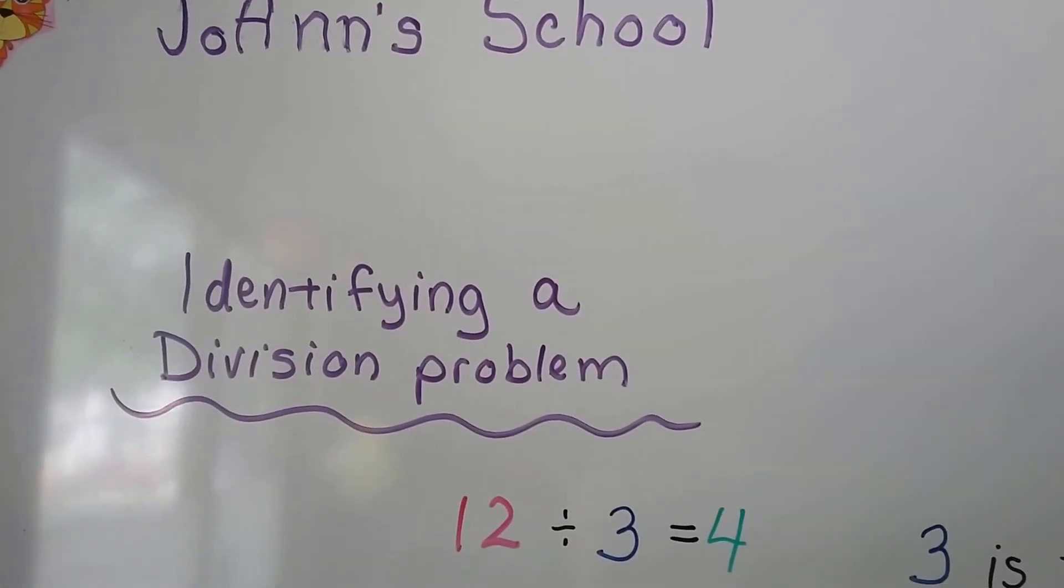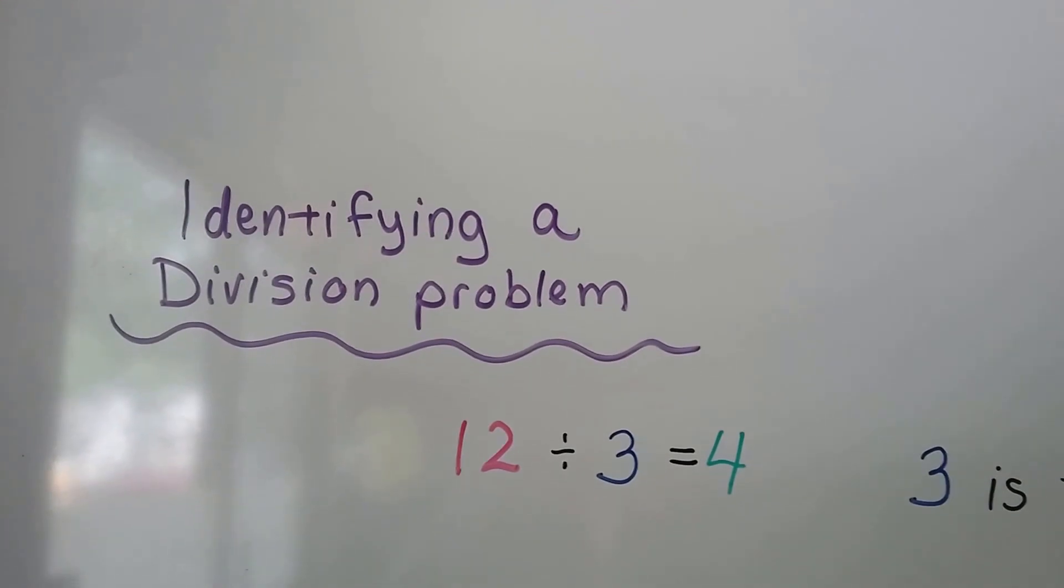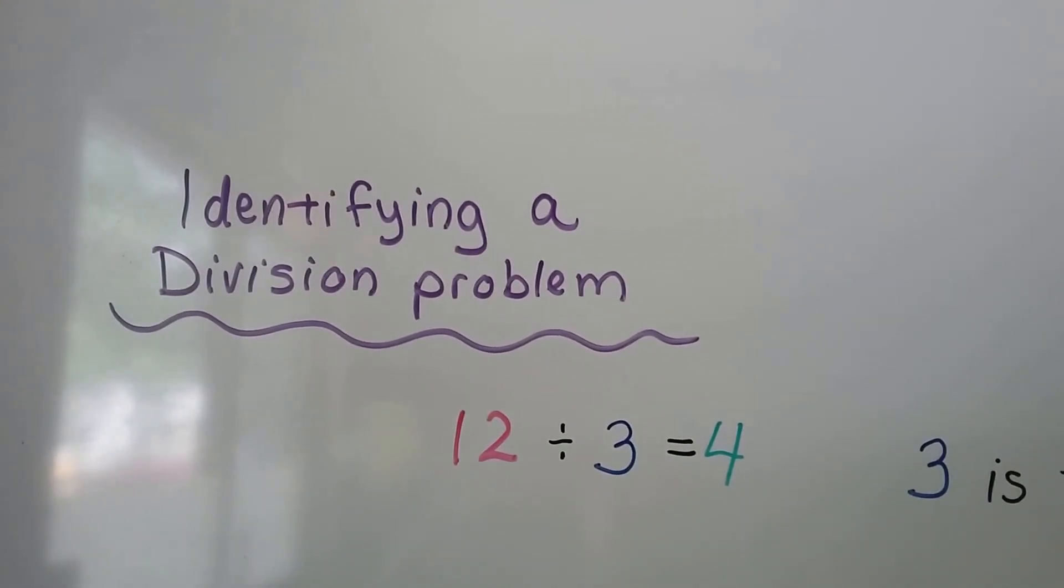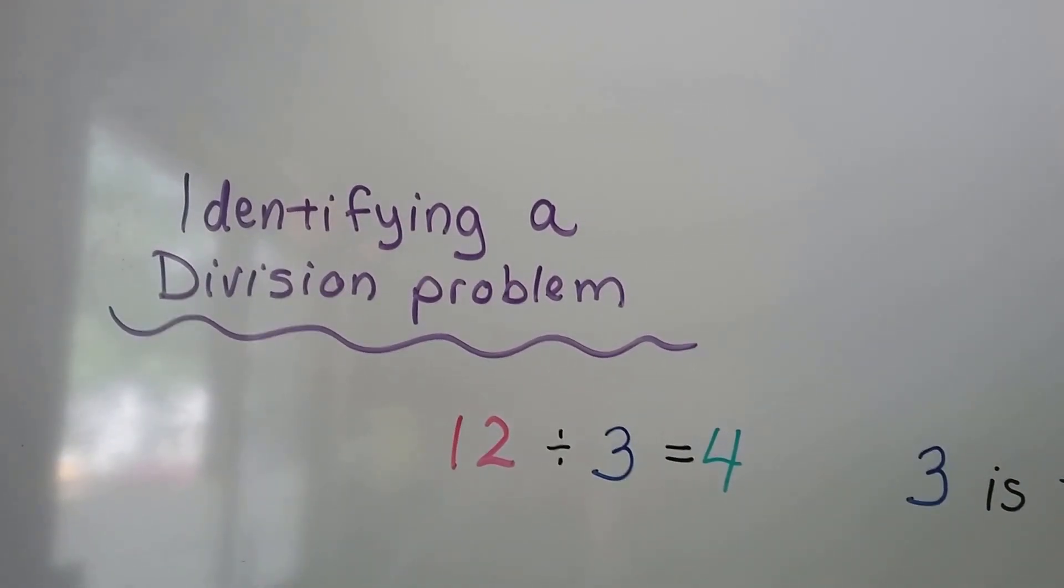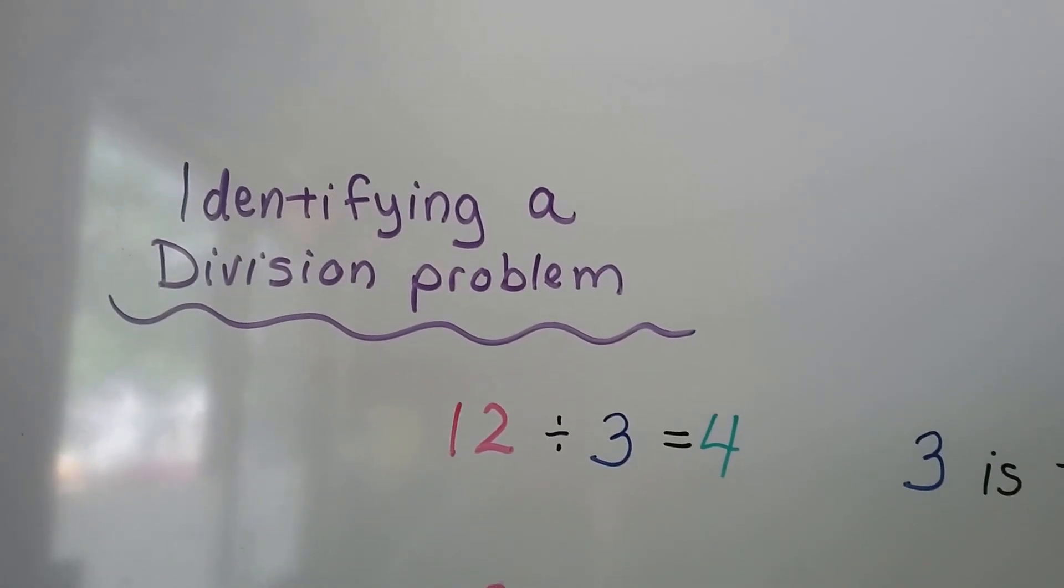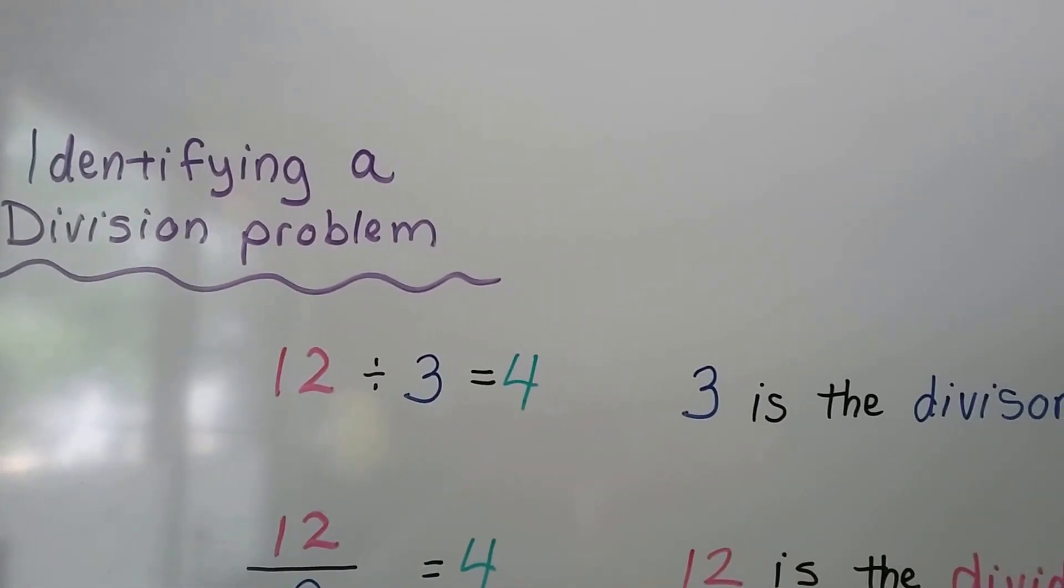Identifying a division problem. When we see the little division sign like this one, 12 divided by 3 equals 4, it's kind of obvious that it's a division problem. The 3 is the divisor.